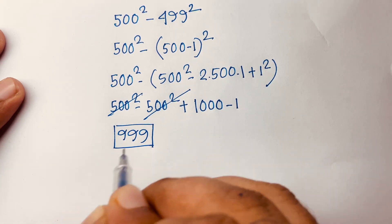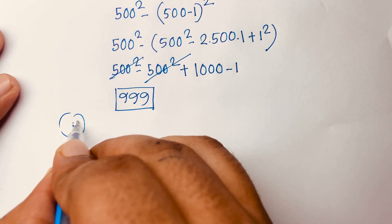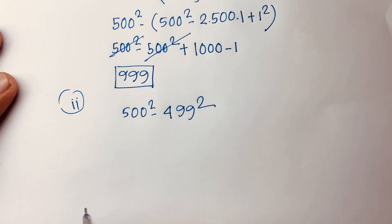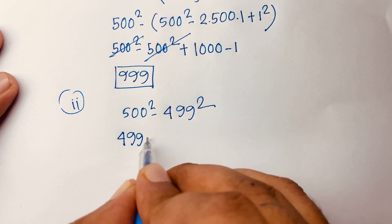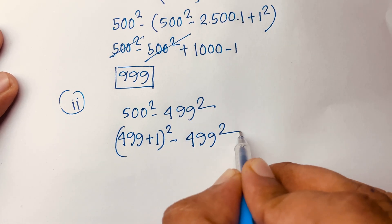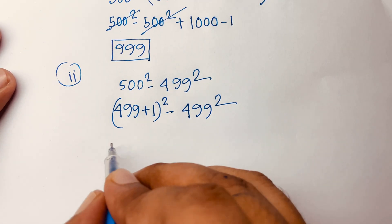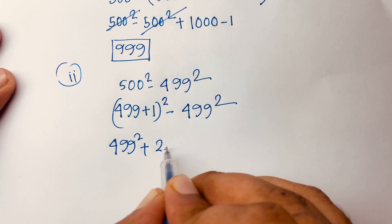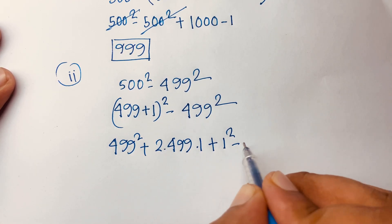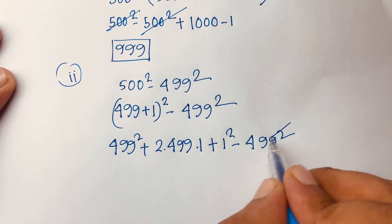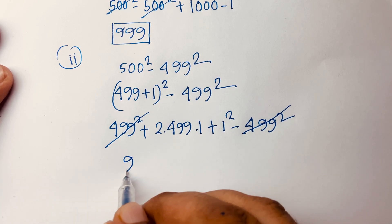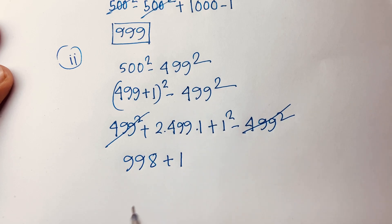For the second method, our question is again 500 square minus 499 square. This time I write 500 as (499 plus 1), so 500 square becomes (499 plus 1) whole square. Using (a plus b) whole square equals a square plus 2ab plus b square, we get 499 square plus 2 times 499 plus 1 minus 499 square. The 499 square terms cancel, giving 998 plus 1 equals 999.